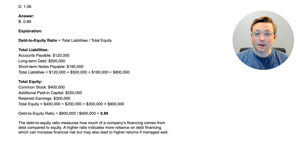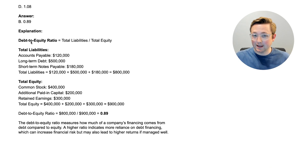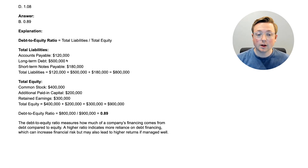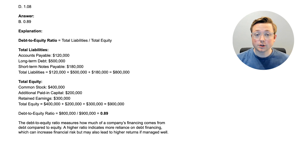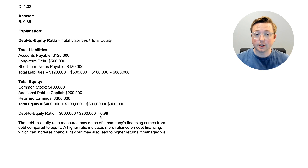The answer is B — 0.89 is the debt-to-equity ratio. This is a very simple calculation. The debt-to-equity ratio is simply total liabilities divided by total equity. You take the accounts payable, the long-term debt, the short-term notes payable, add them all up together, and that gets you $800,000 of liabilities. Then common stock, additional paid-in capital, retained earnings add up to $900,000 of equity. Dividing $800,000 by $900,000 gives you 0.8888, or rounded, 0.89.